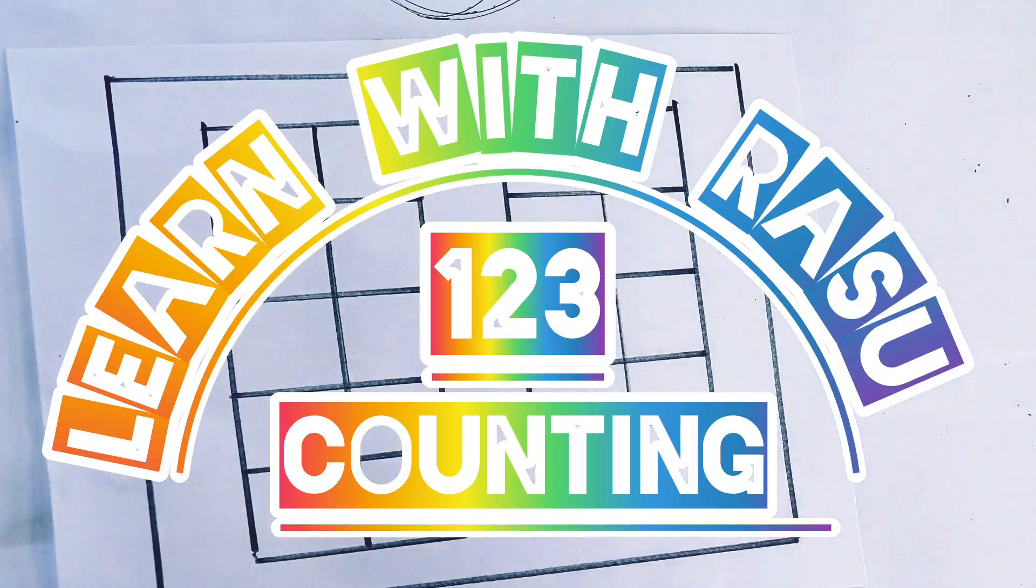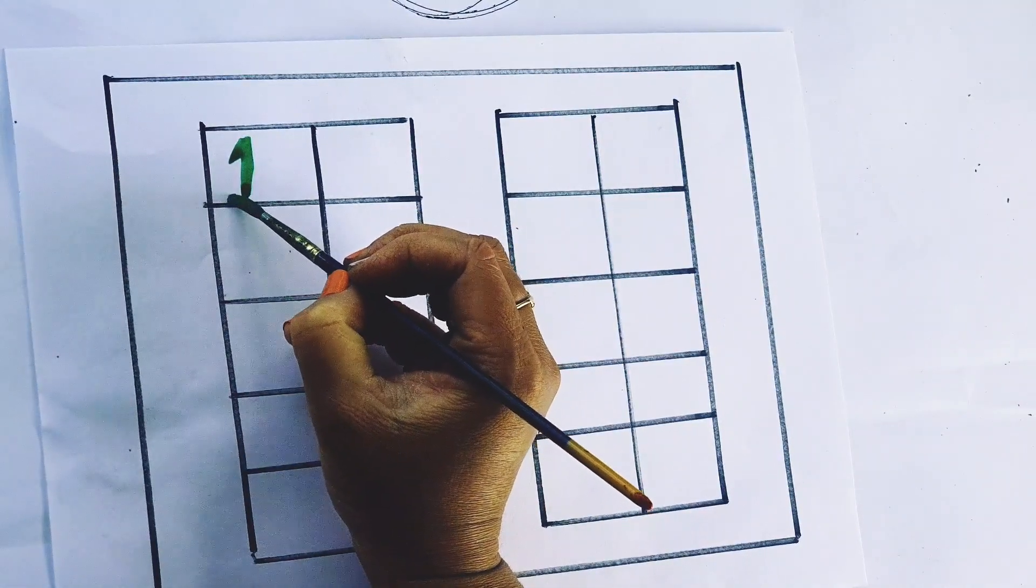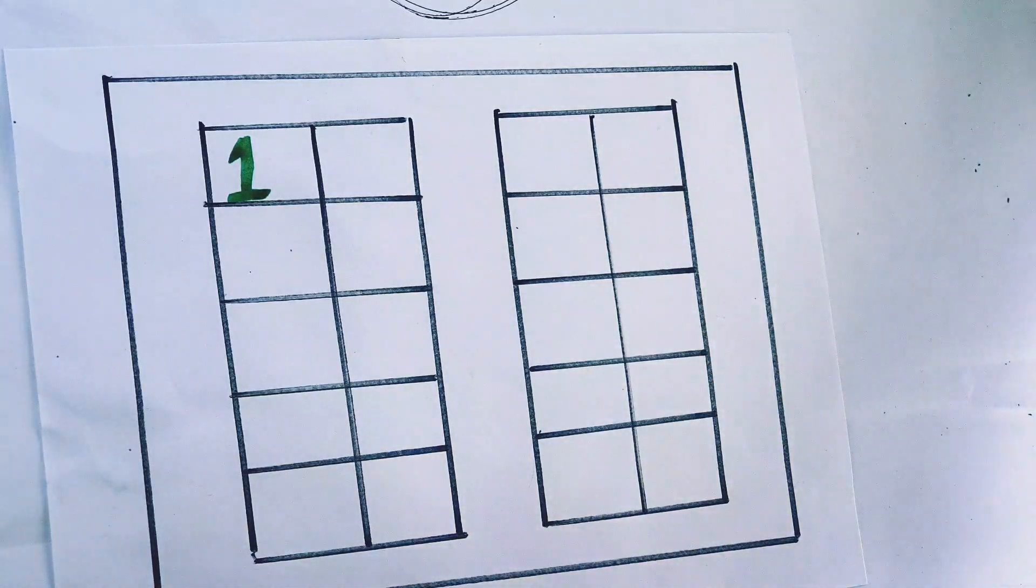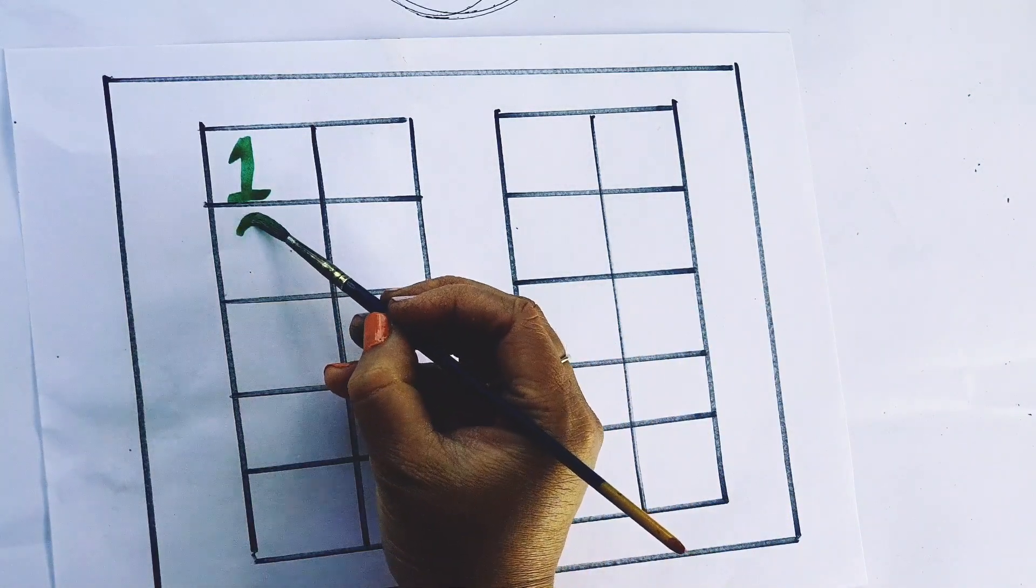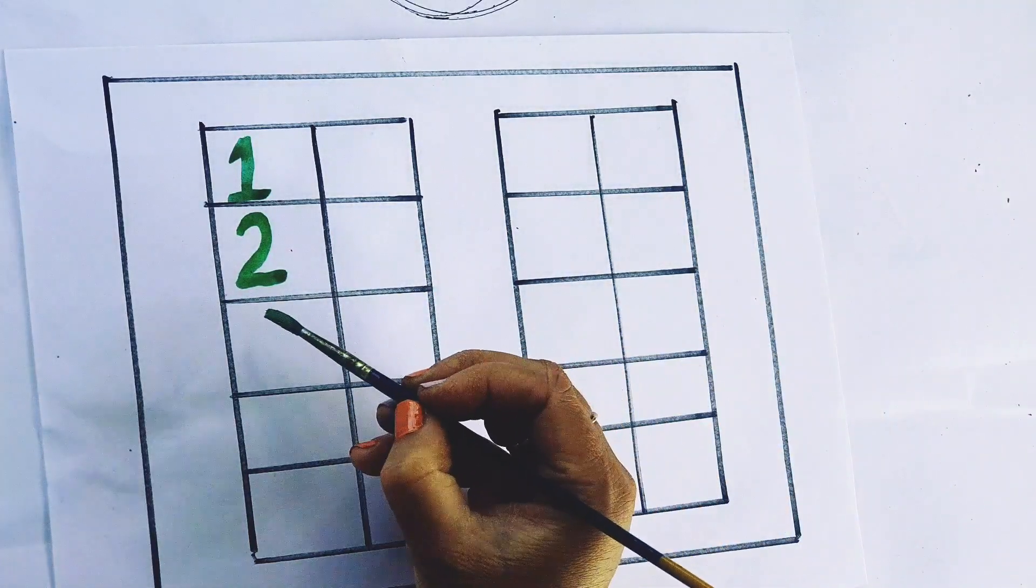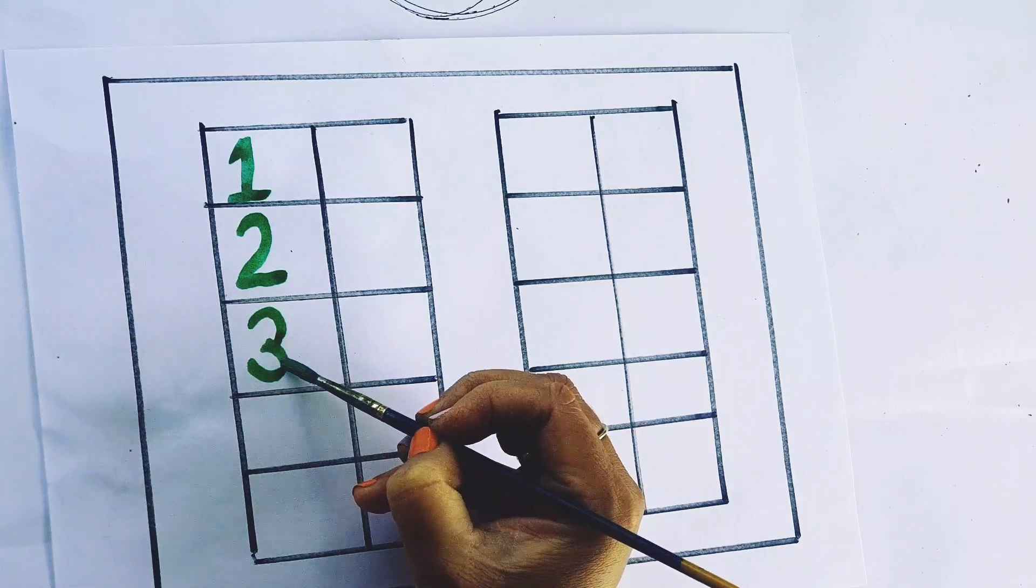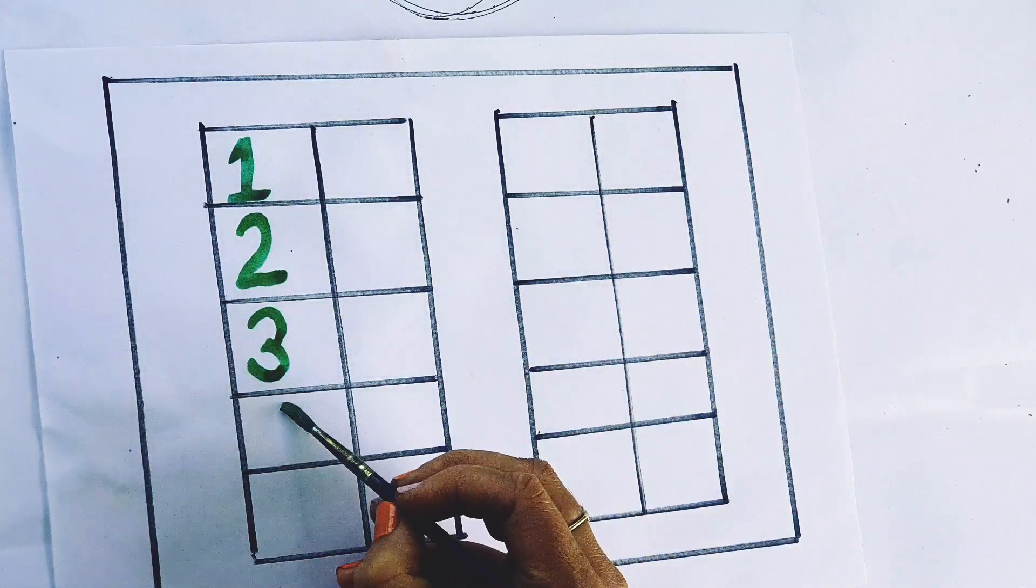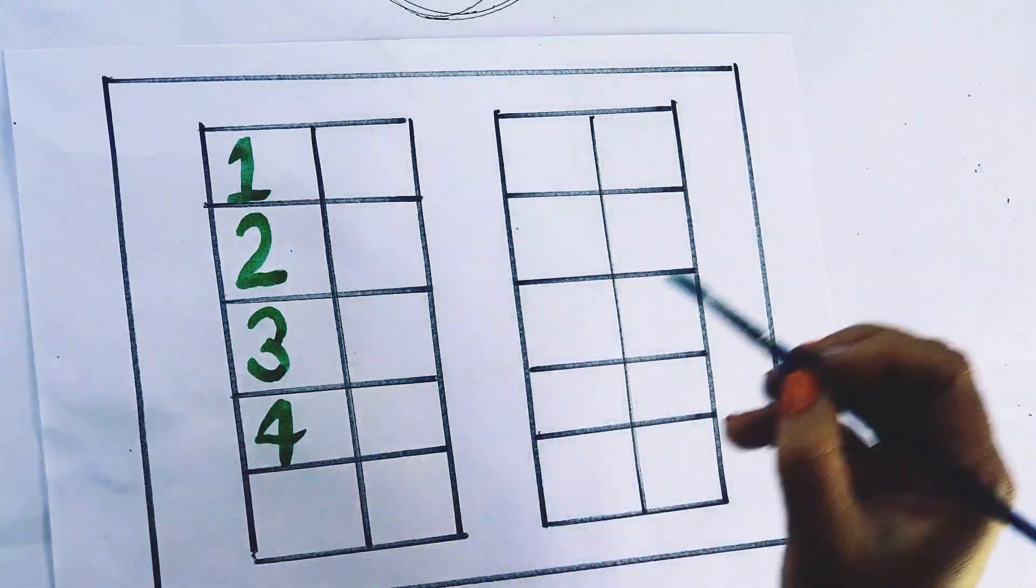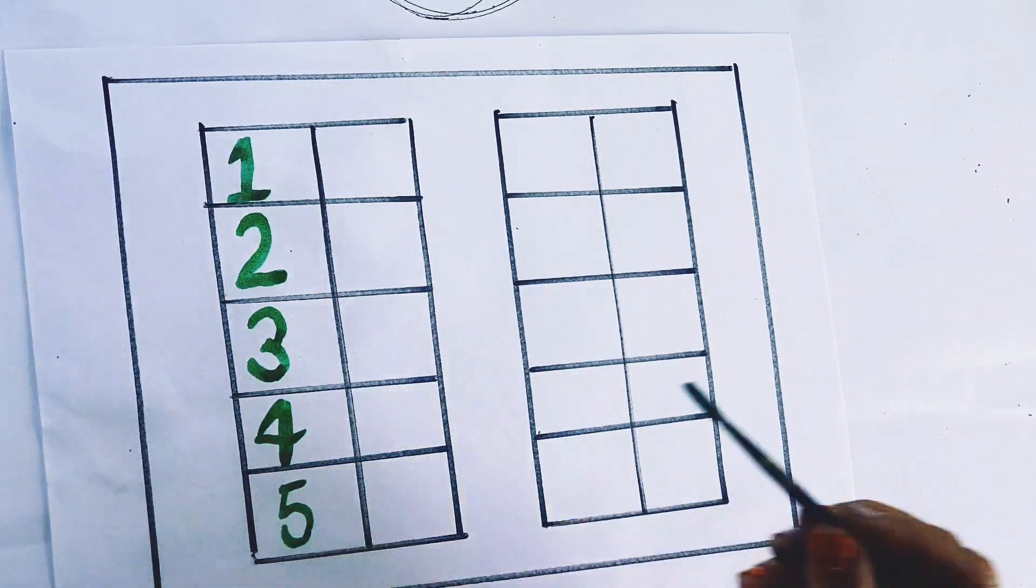Let's start. Green colour, 1, O-N-E-1, 2, T-W-O-2, 3, T-H-R-E-E-3, 4, F-O-U-R-4, 5, F-I-V-E-5.